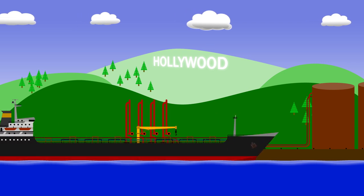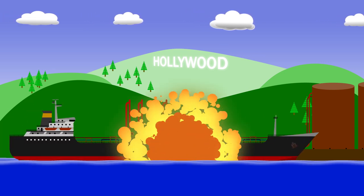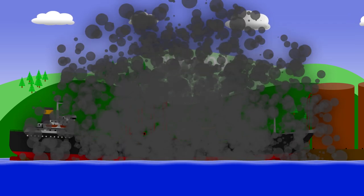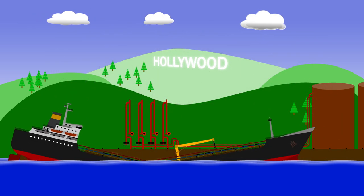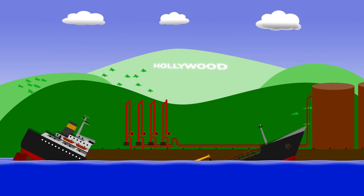In 1976, the tanker Sansonina exploded in Los Angeles. The resultant shockwave literally blew the ship apart, and it shattered windows on houses over 20 miles away.